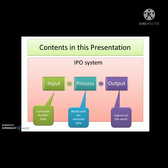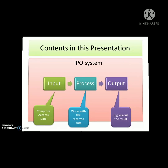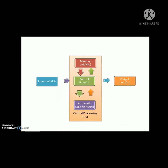The input system accepts the data into the computer. The process unit works with the received data, and the output unit gives out the result. This is the block diagram of a computer. Here you can see the input unit, central processing unit, and output unit.